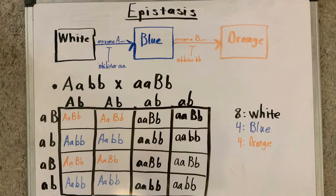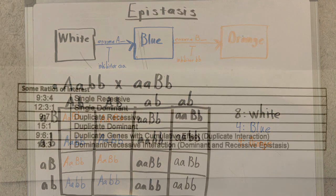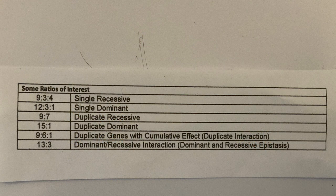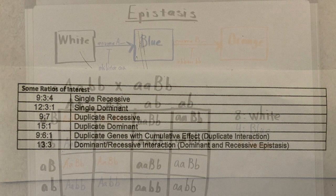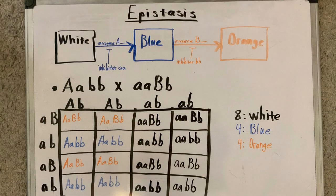When crossing another two parents, the resulting ratios are eight white puppies, four blue puppies, and four orange puppies. When referencing this ratio to our table, there is no existent form of epistasis for this ratio, and this is possible because this is not a dihybrid cross.